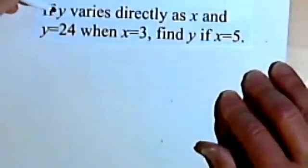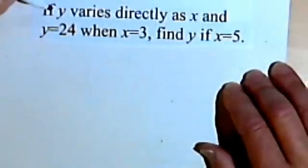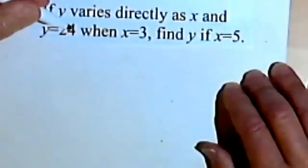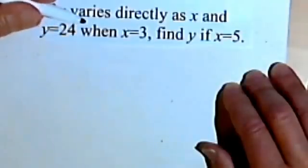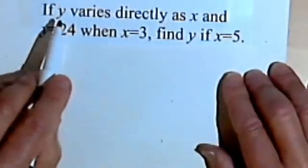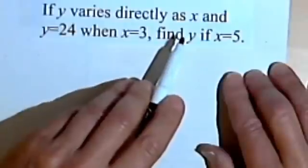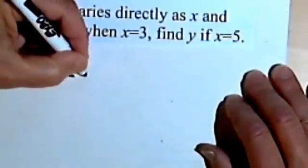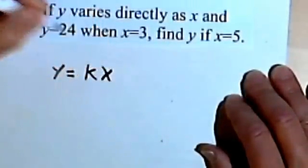So typically you're going to get problems that look something like this. If y varies directly as x, and y equals 24 when x equals 3, find y if x equals 5. So as soon as you see y varies directly as x, write the general formula, y equals kx.